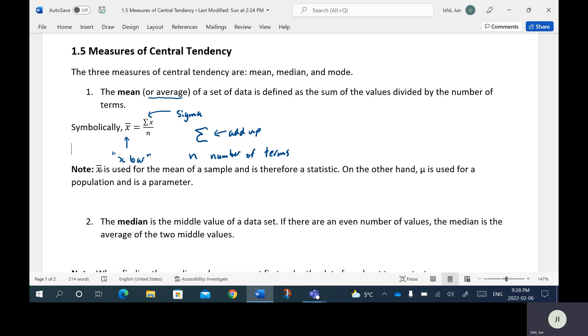One thing we want to make note of though is X bar is used for the mean of a sample and is therefore a statistic. Remember, a statistic is a measurement of a sample. On the other hand, mu is used for a population and is a parameter. So mu is the average of a population or the mean of a population. That's a parameter because that is the measurement of an entire population. So you'll see this mu show up, it means average later on in the course.